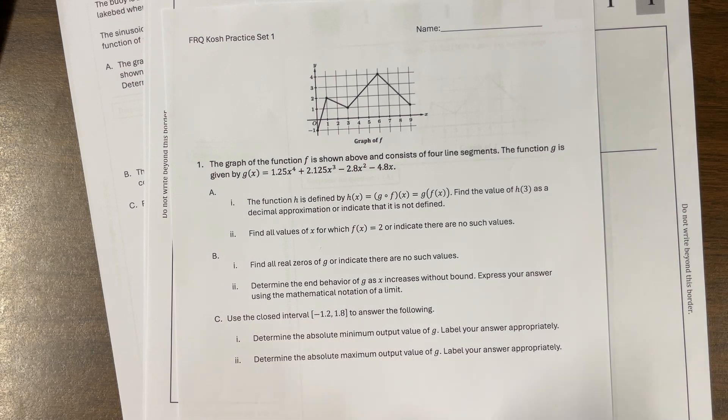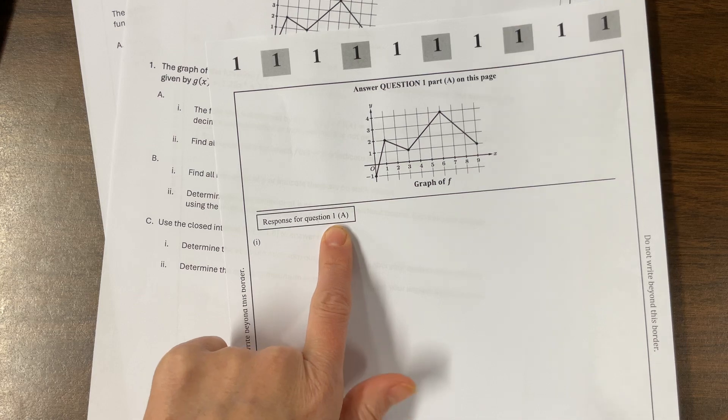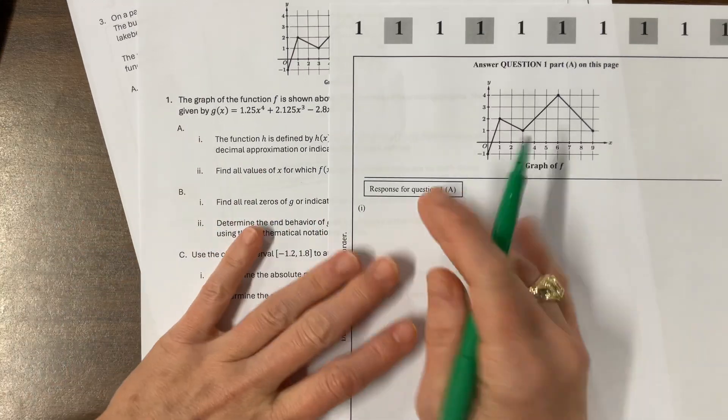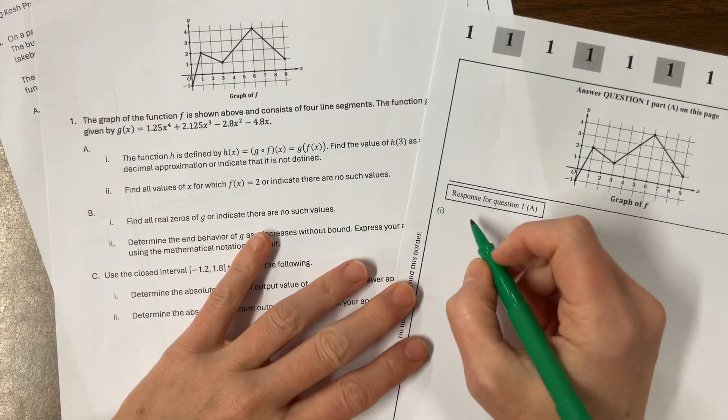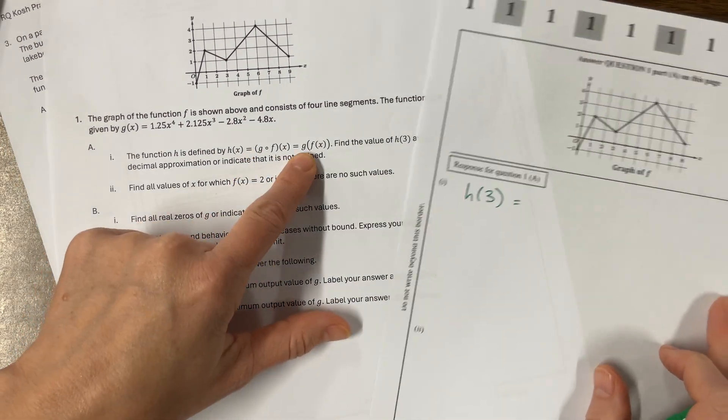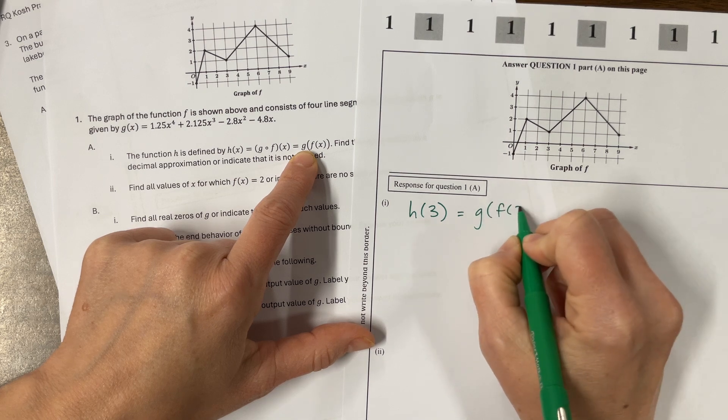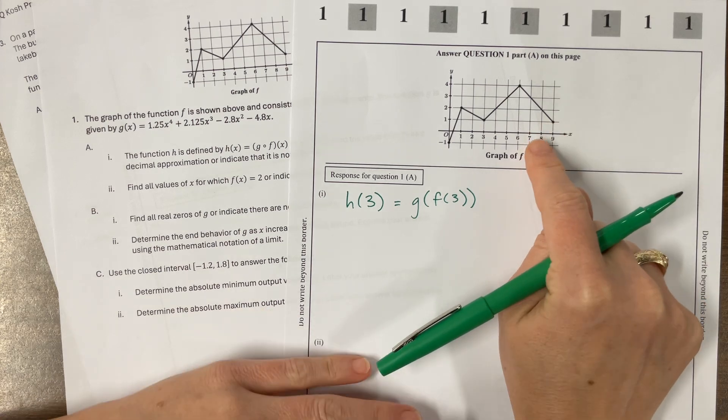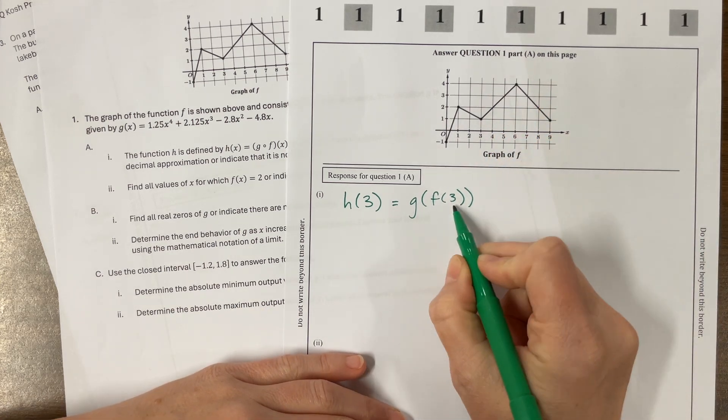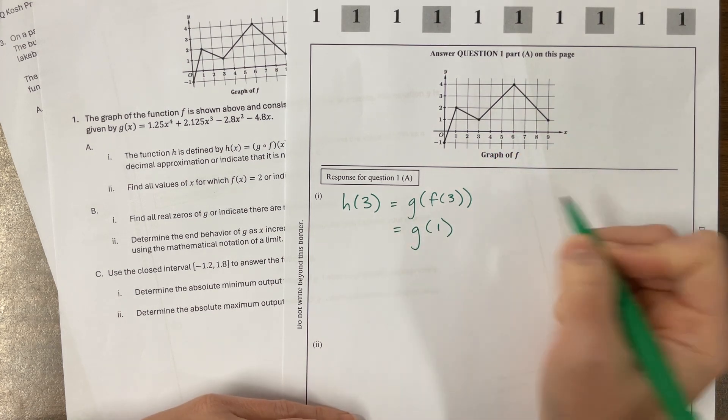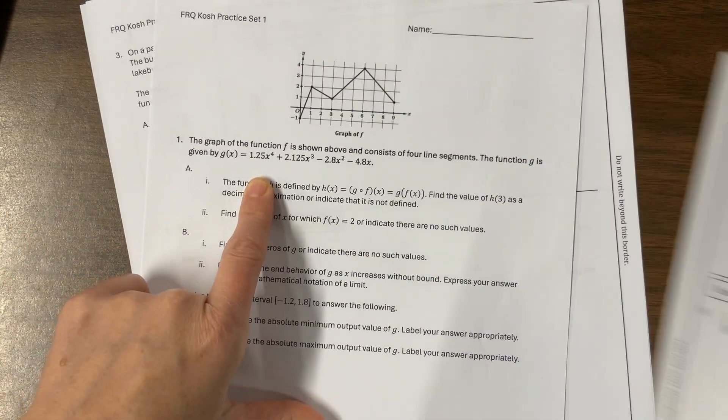And so they want us to find the value of H of 3 as a decimal approximation or indicate that it is not defined. So, on my answer document, the very first thing, part, this is 1 I, 1 A I, so that's here. So, what were they asking? They were asking for H of 3, which is going to be H, which we said was G of F of 3, so we want G of F of 3. Okay, so looking at that, F is this graph up here. So, at F of 3, that's when the X value is equal to 3, I have a Y value of 1.